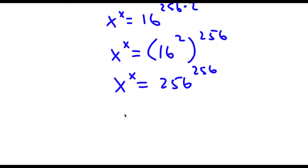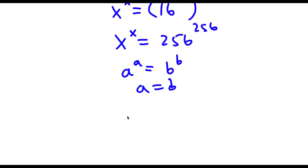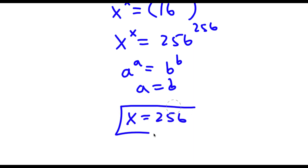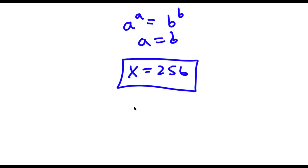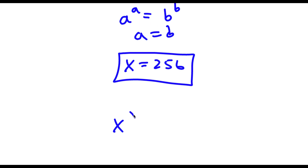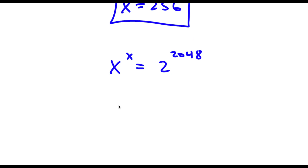Using the rule that if a to the power of a equals b to the power of b then a equals b, I have x to the power of x equals 256 to the power of 256, meaning x equals 256.